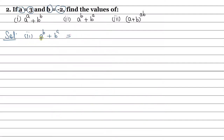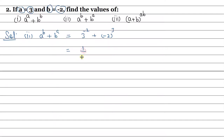Now the second part. We put the values: a to the power b means 3 to the power minus 2, plus b to the power a means minus 2 to the power 3. Since 3 to the power minus 2 has a negative exponent, we use the formula a to the power minus m equals 1 upon a to the power m, so it becomes 1 upon 3 to the power 2.